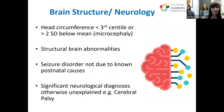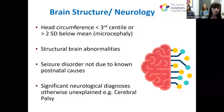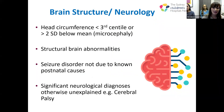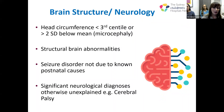The first domain is brain structure and neurology, assessed by the pediatrician on the team. A head circumference measurement is recorded for all children. Structural brain abnormalities associated with PAE include microcephaly — head circumference less than the third centile or more than two standard deviations below the mean — and other structural brain abnormalities. A child fulfills criteria for severe impairment if they present with a seizure disorder not due to known postnatal causes, or a significant neurological diagnosis otherwise unexplained, such as cerebral palsy.